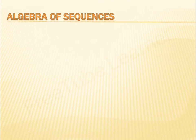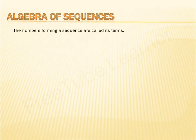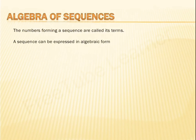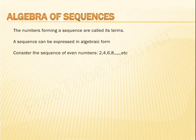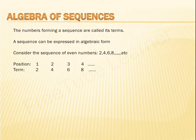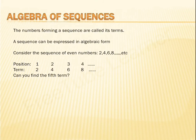Now let us move to the topic: algebra of sequences. The numbers forming a sequence are called its terms, and a sequence can be expressed in algebraic form. Let us consider the sequence of even numbers. Writing down positions and terms: position 1 → term 2, position 2 → term 4, position 3 → term 6, position 4 → term 8. Can you find the 5th term?